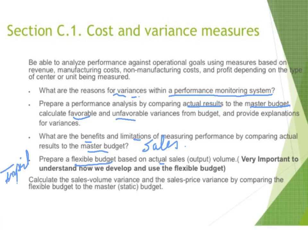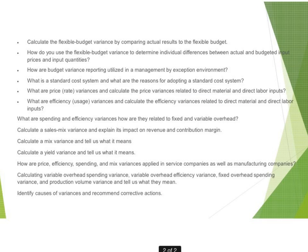Base that flexible budget on actual sales volume, compared to what the master budget would have been if we knew what the actual sales volume would be. This is very important — it could be tested in the essay part of the exam, as well as in the multiple choice questions. Sales volume variance and sales price variance are straightforward — that's just comparing against the master budget. Now you're going to focus on that flexible budget variance.